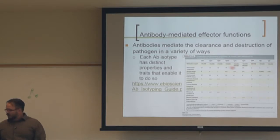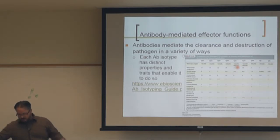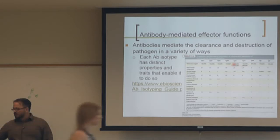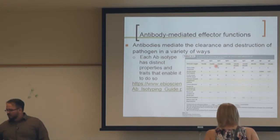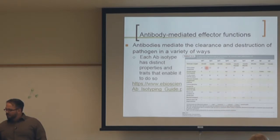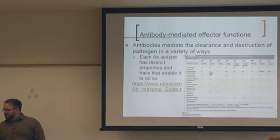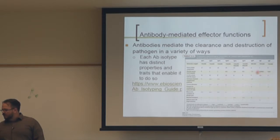IgA can form dimers or trimers; the dominant form is a dimer, though it can range from monomer to trimer. The majority of immunoglobulins in serum are IgG1, then IgG2, followed by IgA, IgM, and very low numbers of IgE — which is good, because IgE is associated with allergic reactions.